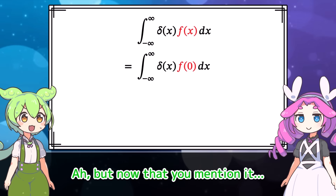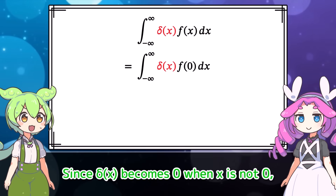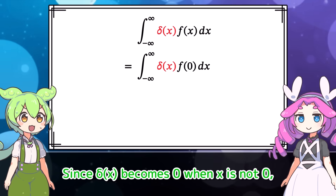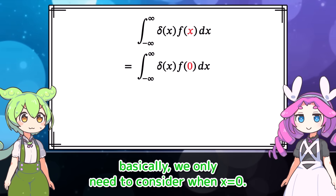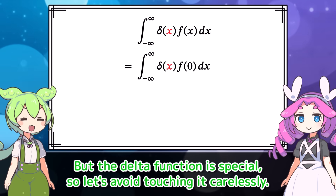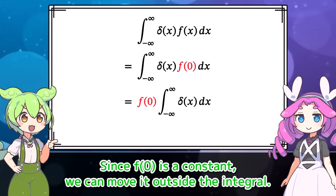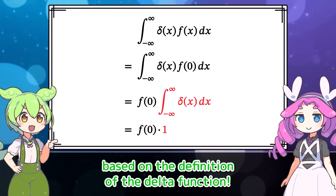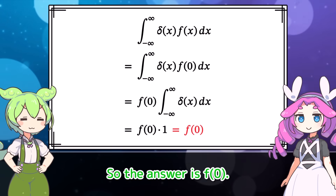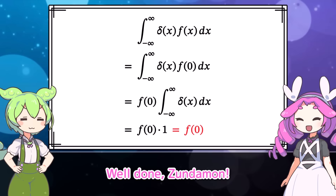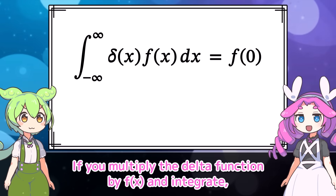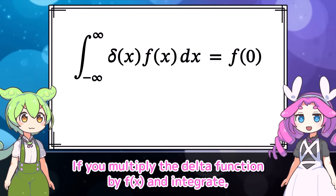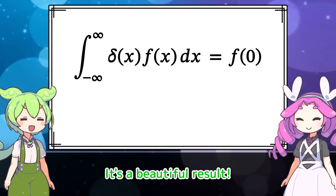You can replace f of x with f of 0 and proceed with the calculation. Since delta of x becomes 0 when x is not 0, basically we only need to consider when x equals 0. Since f of 0 is a constant, we can move it outside the integral, and this part becomes 1 based on the definition of the delta function. So the answer is f of 0. To sum up, if you multiply the delta function by f of x and integrate, you get f of 0. It's a beautiful result.